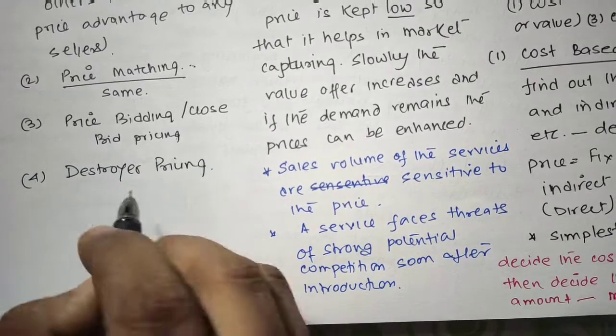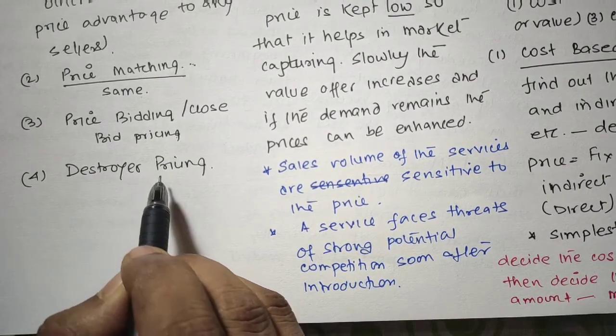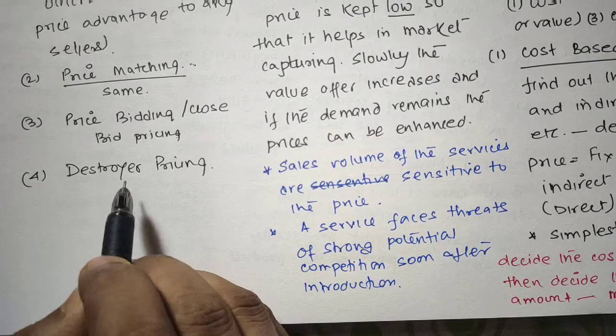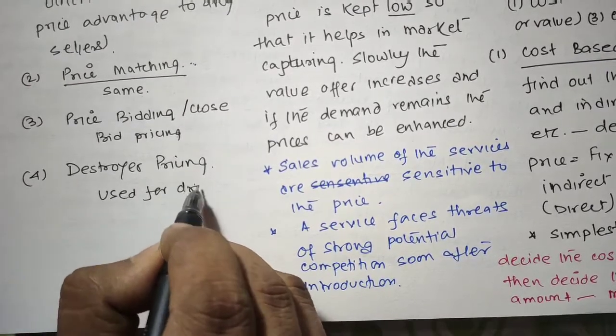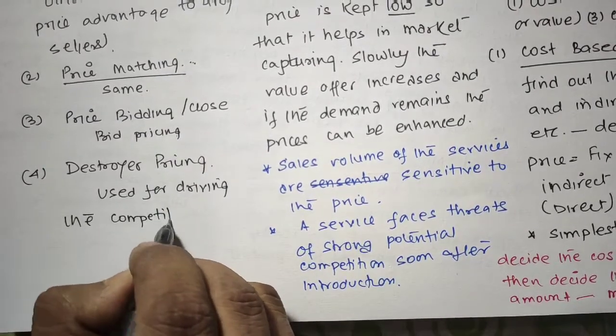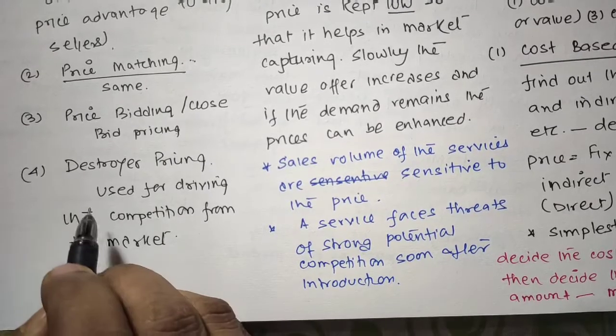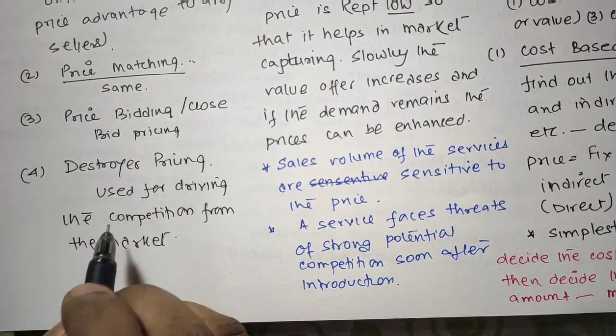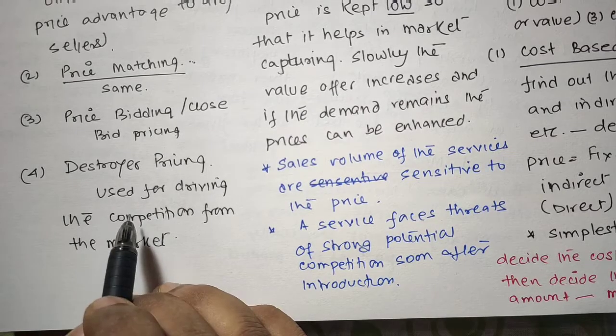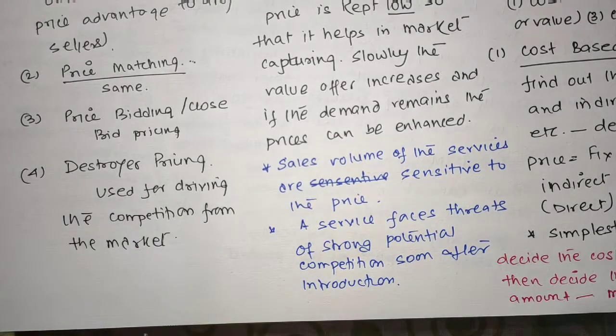The last one is destroyer pricing. It is the setting of price at very low so that the competitor cannot match it. The price is set without making any loss and mostly it is used for driving the competition from the market. Any firm adopting this strategy should be very careful for setting the price so that they should not suffer loss. And also if the competitors are strong enough, the firm itself may be driven out of the business.